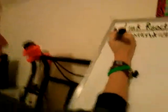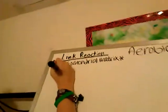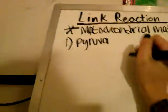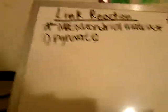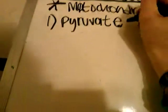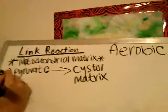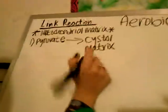Link reaction! It starts with pyruvate, which was produced in glycolysis, and is now the reactant of this reaction. Pyruvate is pumped into the mitochondrial matrix by active transportation, which you might hopefully know if you're studying this, and energy is used to pump it in.